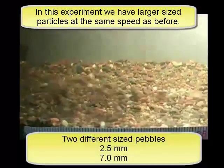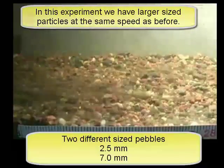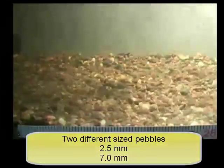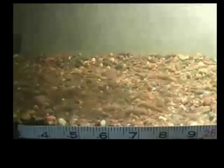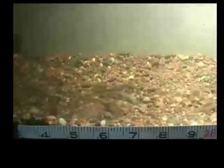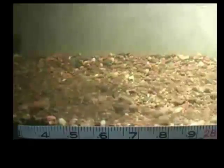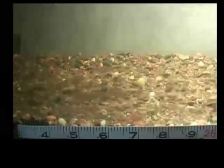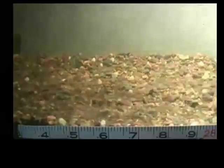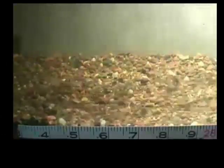In this next experiment, there's two different sized pebbles. We've got the 2.5 and the 7.0 millimeter sized particles. And if you look carefully, I wish it was almost slower, we're keeping the same speed up, that the smaller ones are moving more than the bigger ones. And that makes sense because the smaller ones are more easily transported as we look at this stream table experiment.